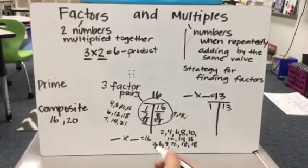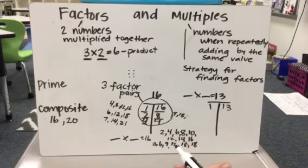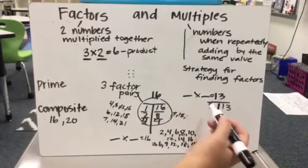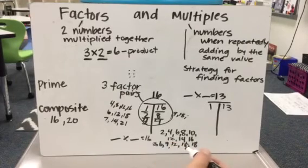Now if I skip count by 2s, 2, 4, 6, 8, 10, 12, 14, it doesn't land on 13. So 2 doesn't work equally with 13. So that doesn't work.